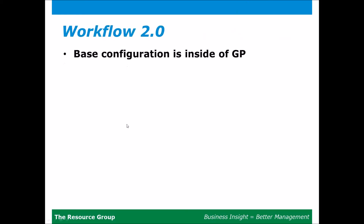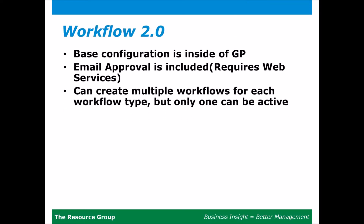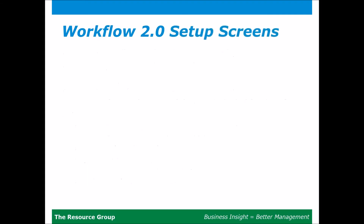The setup for workflow is completely inside of GP. Email approval is included and requires web services. You can create multiple workflows for each workflow type, but only one can be active at a time. The options inside the setup include: send notifications for completed actions, allow approver to delegate tasks, allow originator to be an approver, require an approver, use alternate final approver, and action to take for an overdue task.